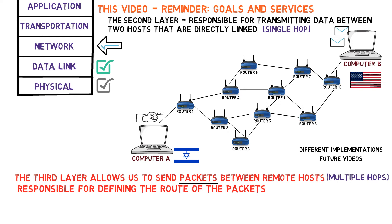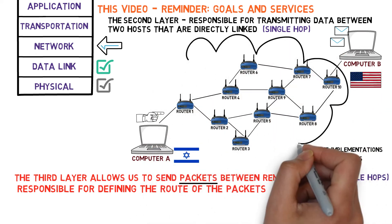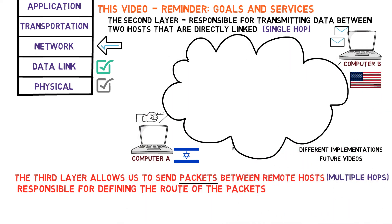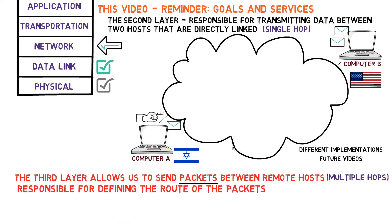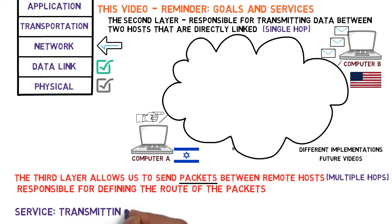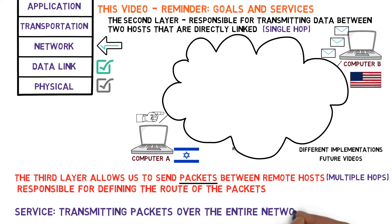So what is the service that the network layer provides to the fourth layer, that is, the transportation layer? The fourth layer views all of this network diagram as an abstract cloud. It doesn't know the routers, and it doesn't care about the structure of the network or the routing. It assumes that the network can send the packet from one end to another. The network layer should supply exactly that — provide a service of transmitting packets over the entire network.